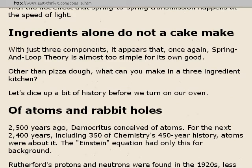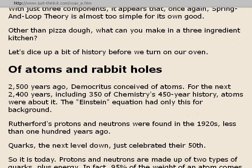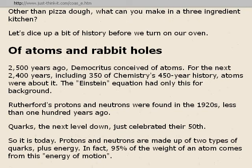Of atoms and rabbit holes: 2,500 years ago, Democritus conceived of atoms. For the next 2,400 years, including 350 of chemistry's 450-year history, atoms were about it — that's the background against which the Einstein equation emerged. Rutherford's protons and neutrons were found in the 1920s, less than 100 years ago. Quarks, the next level down, just celebrated their 50th. Protons and neutrons are made up of two types of quarks, plus energy — in fact, 95% of the weight of an atom comes from this energy of motion.